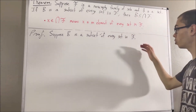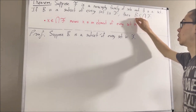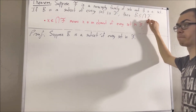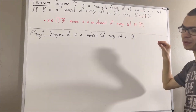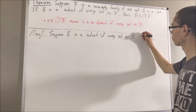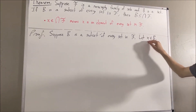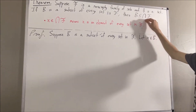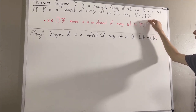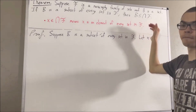Our whole goal now is to show that everything in b also lies in the intersection of f. So we want to show that x lies in the intersection of f, which means we want to show x is an element of every set in f.